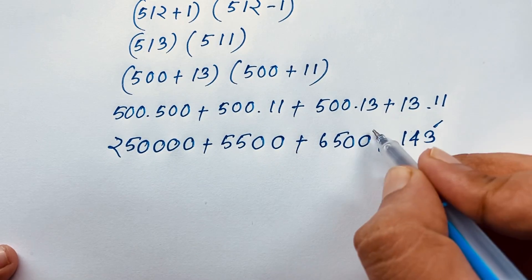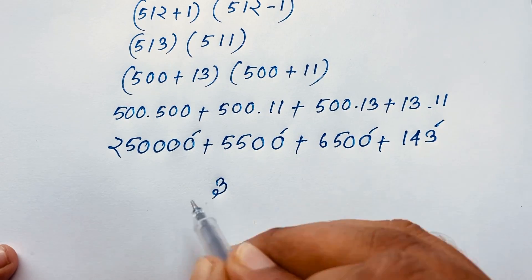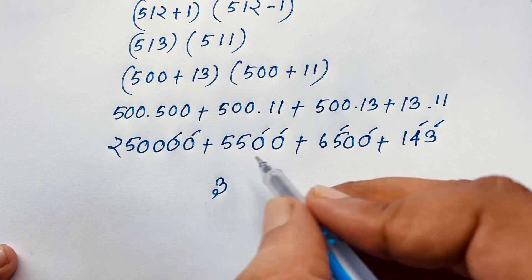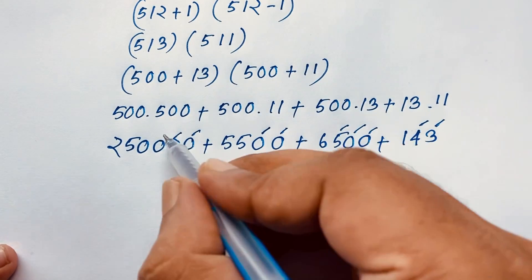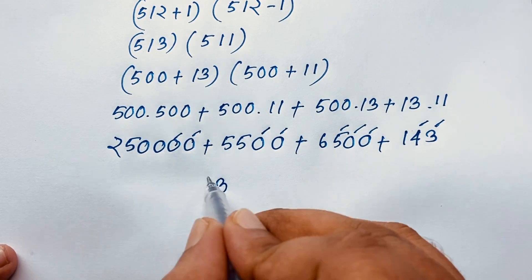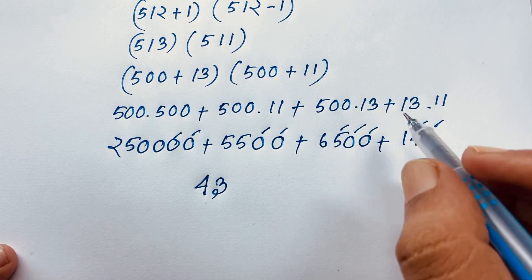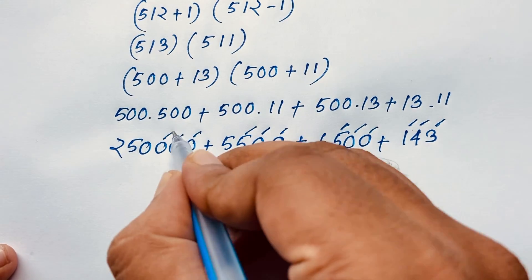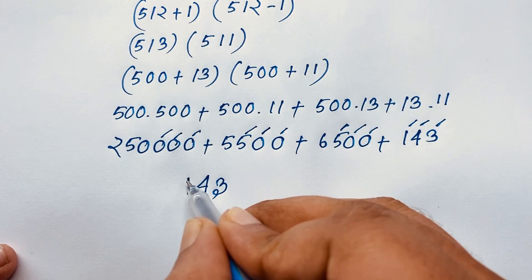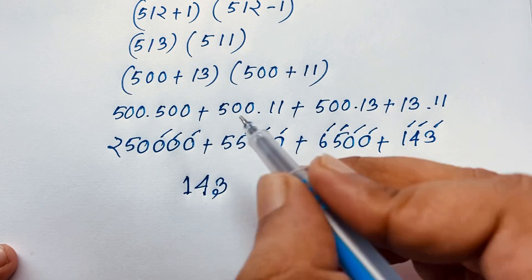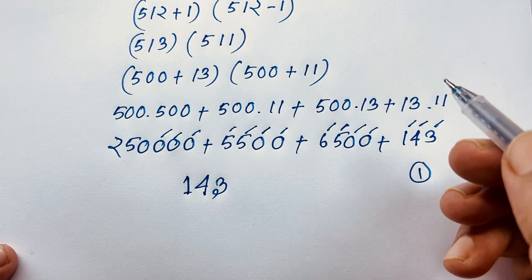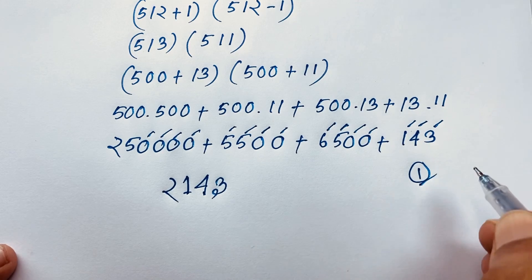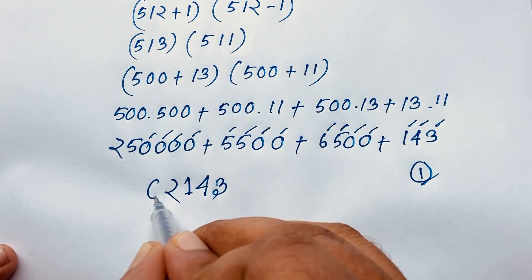Now if I add: 3 plus 0 plus 0 plus 0 is 3. Then 4 plus 5 is 9, plus another 5 is... carrying over. Then combining all terms: 250,000 plus 5,500 plus 6,500 plus 143. Adding digit by digit: we get 1 carry, then 6 plus 5 is 11, carry 1, then 6 plus 5 is 12, carry 1, then 1 plus 5 is 6. Our final answer is 262,143.